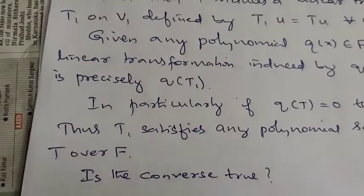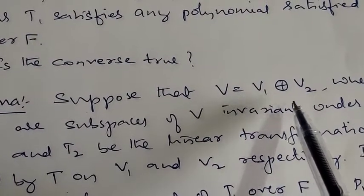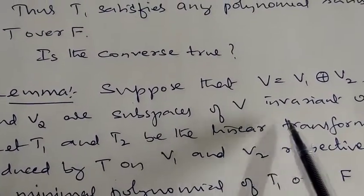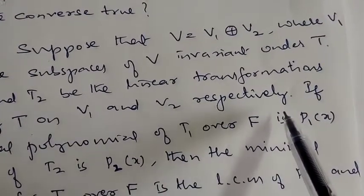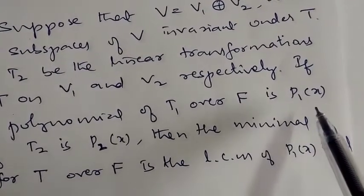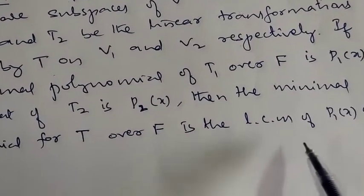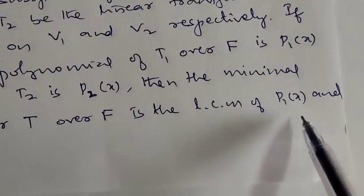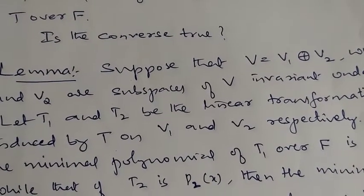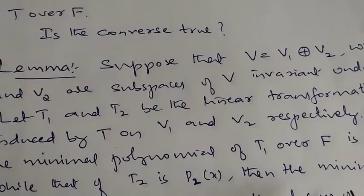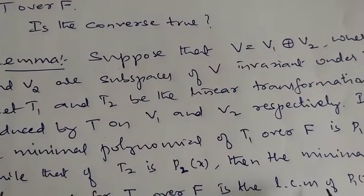Now the converse also holds. Suppose V is the direct sum of subspaces V1 and V2, where V1 and V2 are invariant under T. Let T1 and T2 be the linear transformations induced by T on V1 and V2 respectively. If the minimal polynomial of T1 is P1(x) and that of T2 is P2(x), then the minimal polynomial of T is the LCM of P1(x) and P2(x).